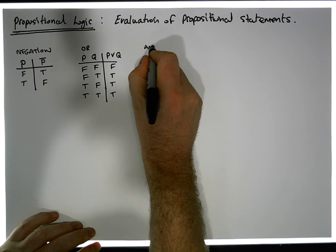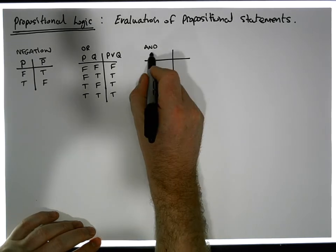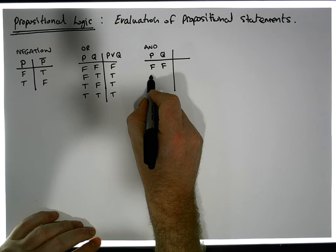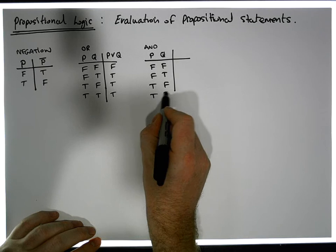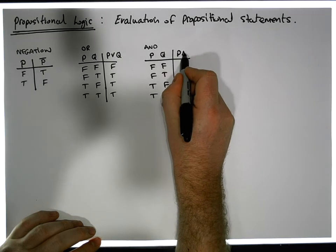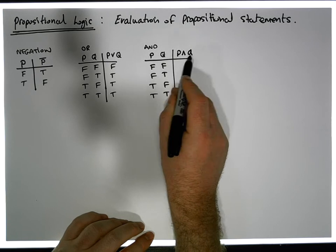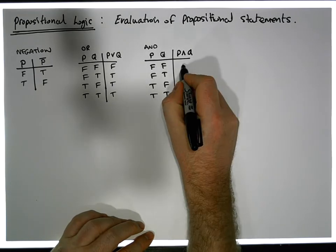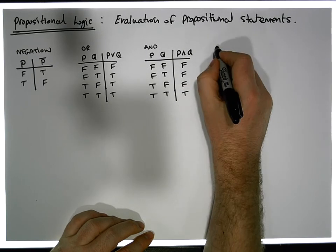That's our second operator — the V symbol, which represents OR. The third one is AND. AND is also binary; it takes two inputs P and Q. AND, symbolized by P-hat-Q, is only ever true when both inputs are simultaneously true. In all other cases it's false.